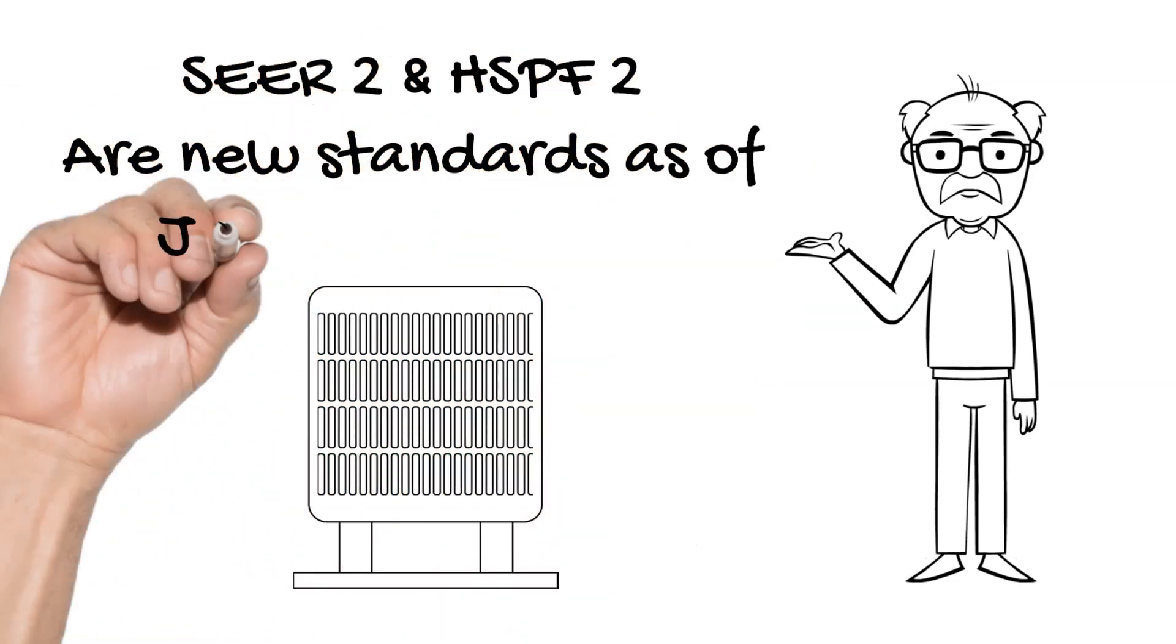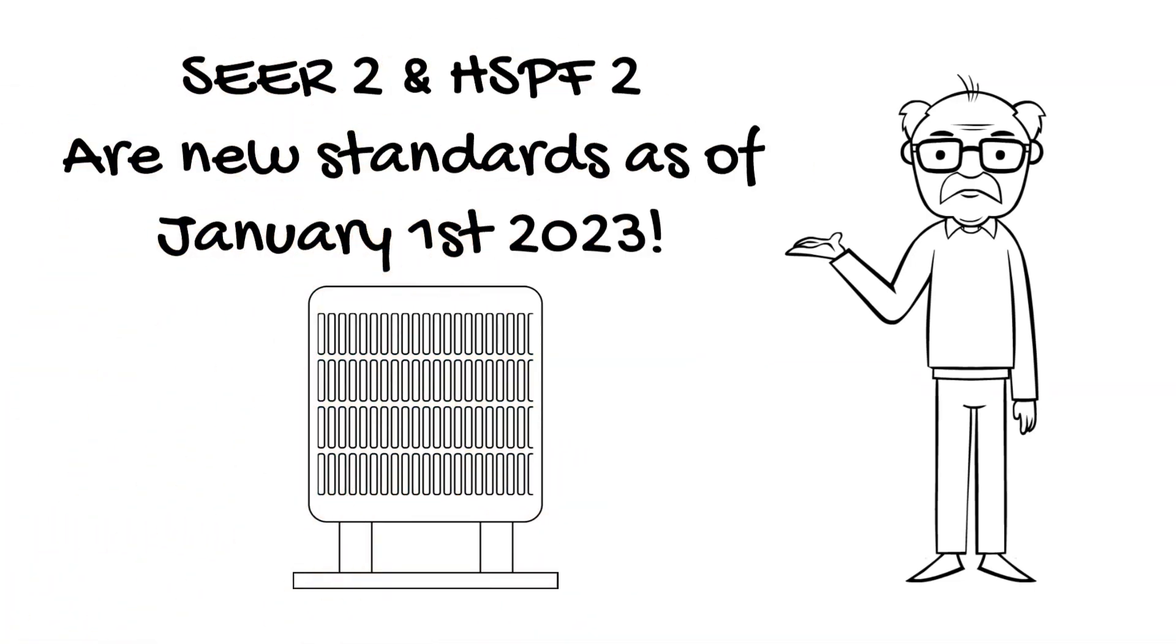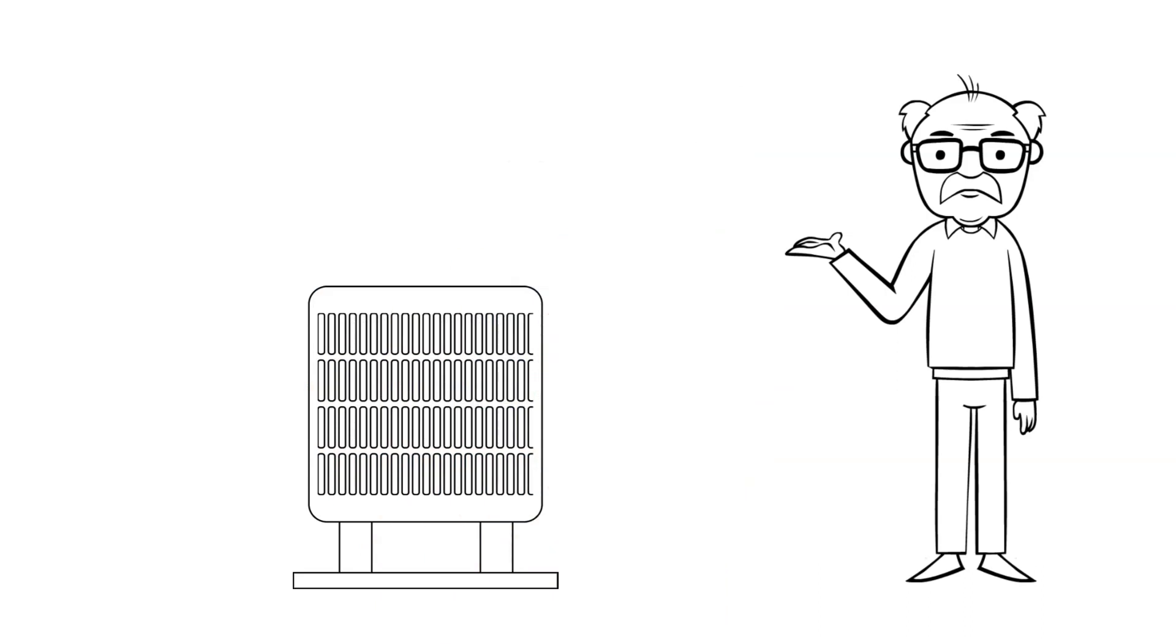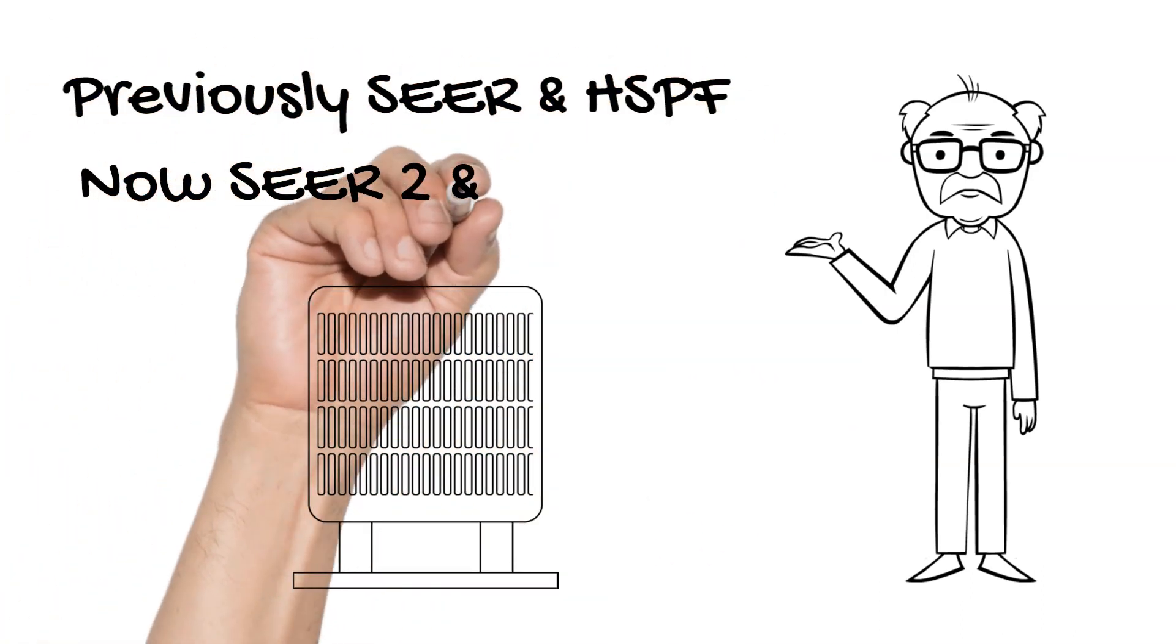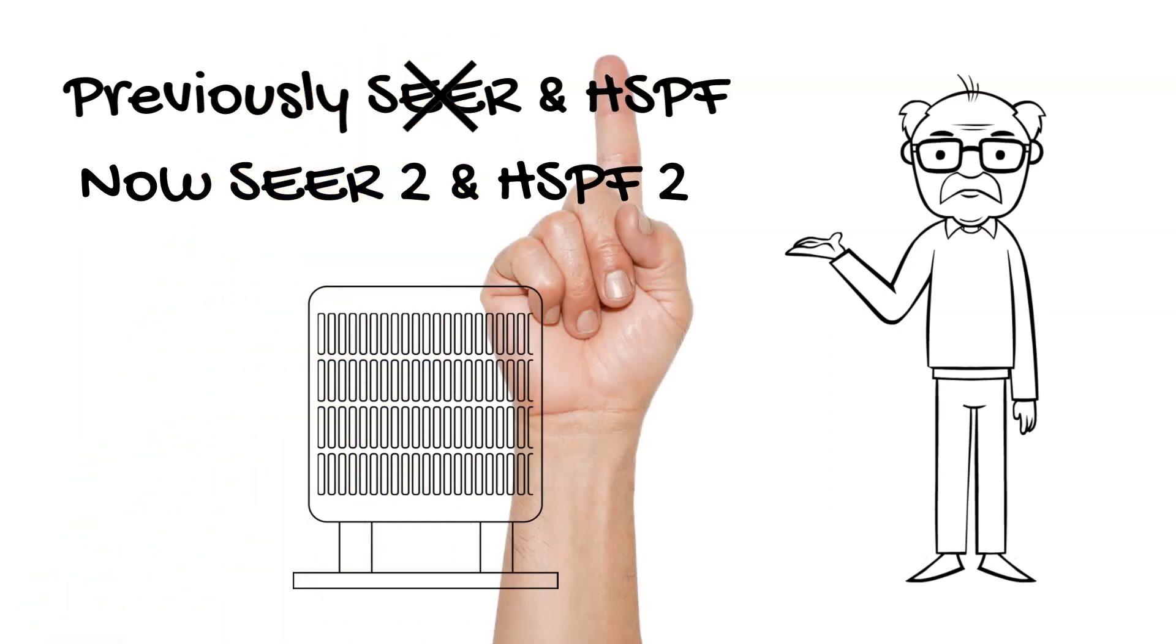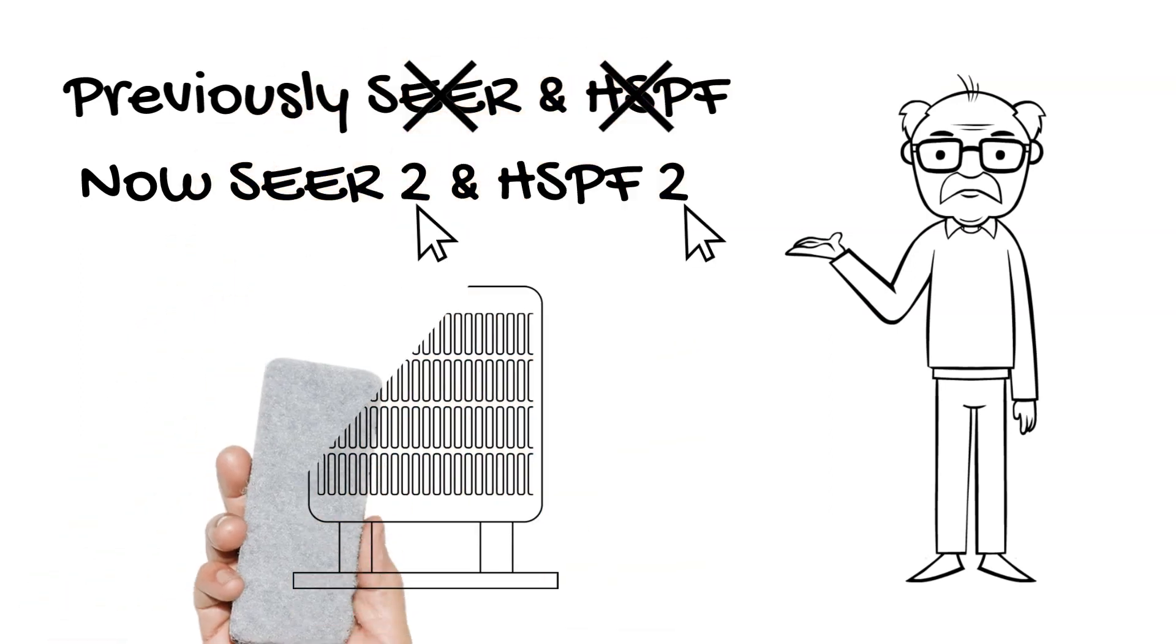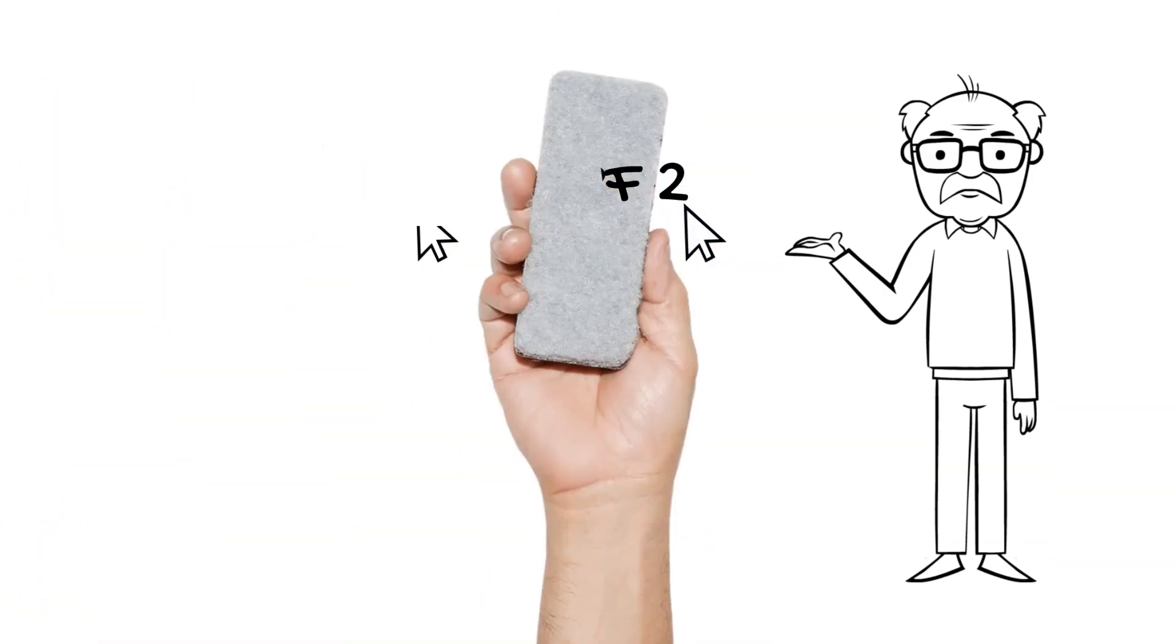SEER2 and HSPF2 are new standards as of January 1st, 2023. Previously, these were just SEER and HSPF. The added two signifies the value is determined by the new federally required testing standards.